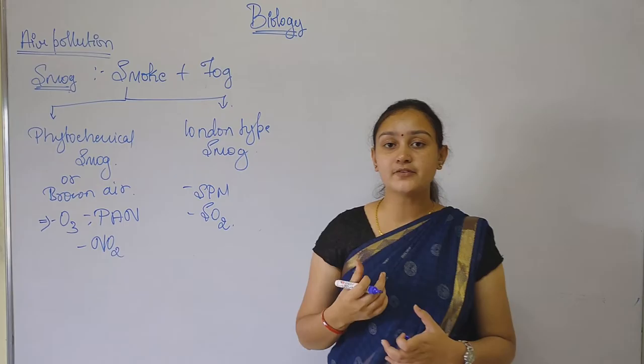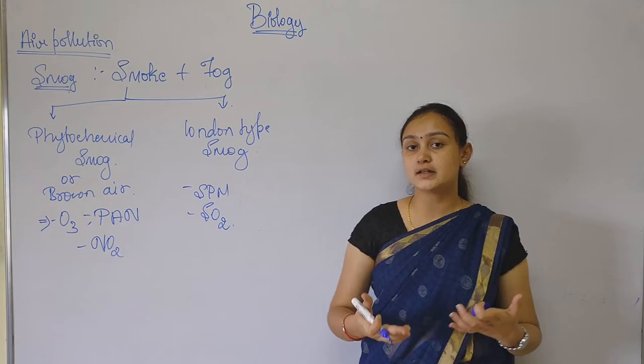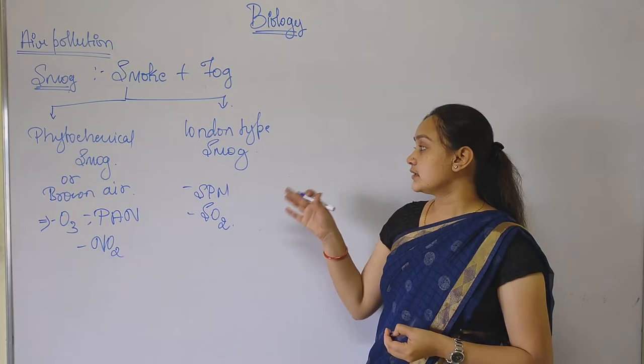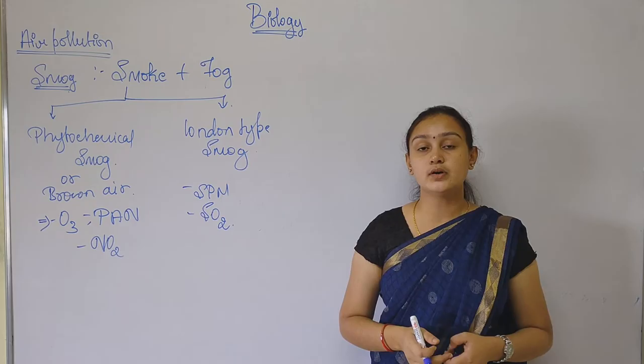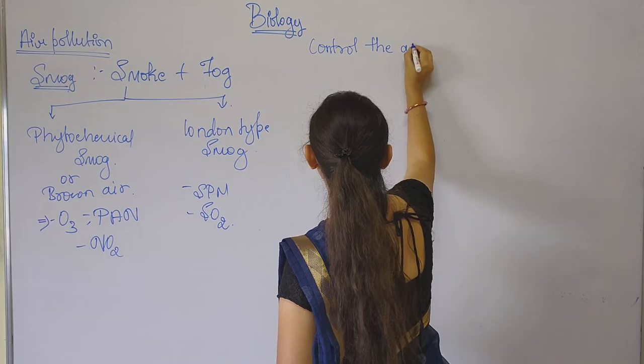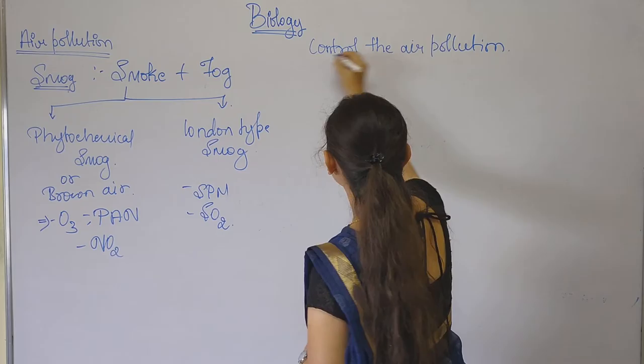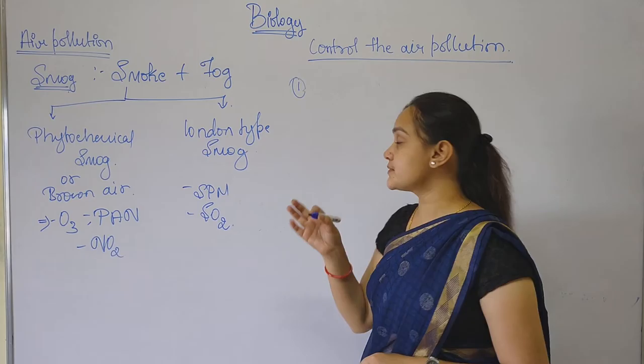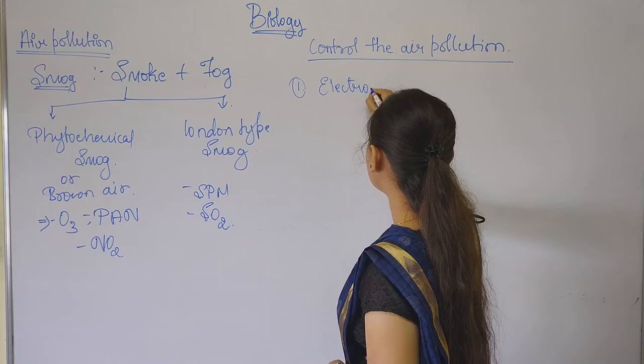Now we shall see how to control the air pollution, especially when the air is polluted with suspended particulate matter. Suspended particulate matter is very fine matter present in the air, released by different methods. This suspended particulate matter needs to be removed. Let us learn how to control the air pollution.